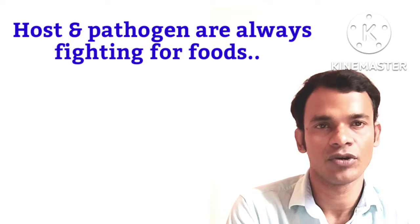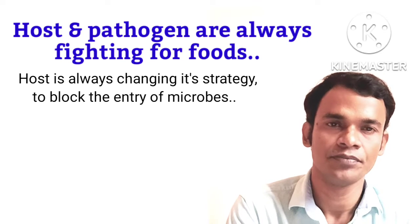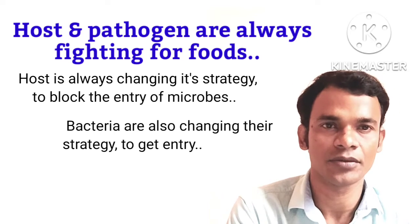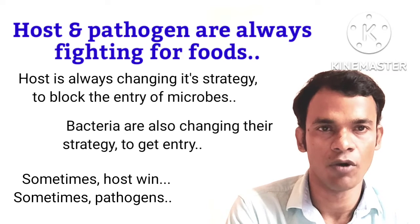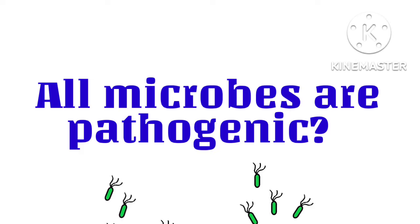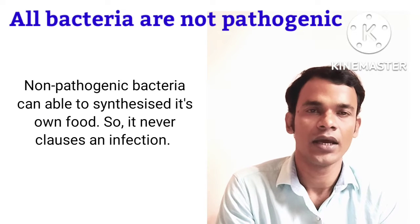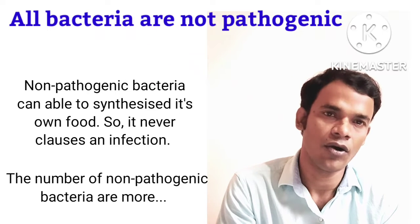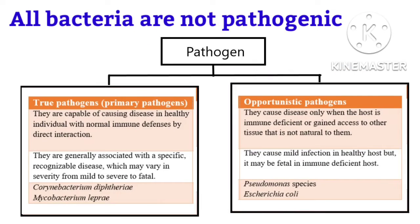The relationship between host and pathogen is complex and dynamic — sometimes the host survives, sometimes the pathogen wins. It totally depends on who evolves more rapidly. Most microbes synthesize their own food and never infect others; they are called non-pathogenic. Microbes that can cause disease in a healthy individual are called primary pathogens or true pathogens. In contrast, microbes that cause disease only when the immune system is compromised, or if introduced into an unusual location, are called opportunistic pathogens.